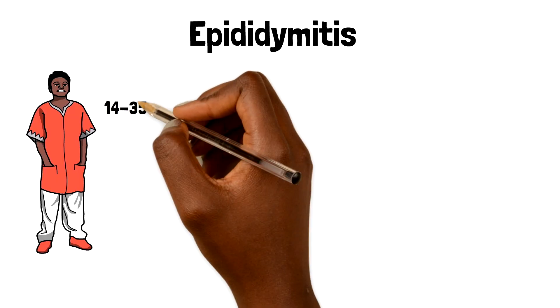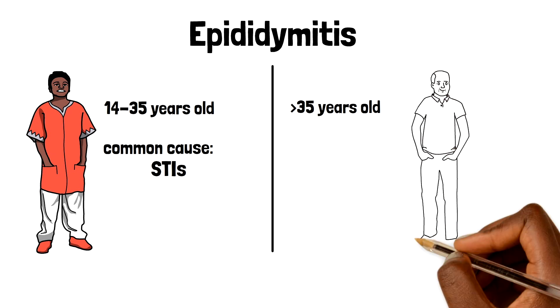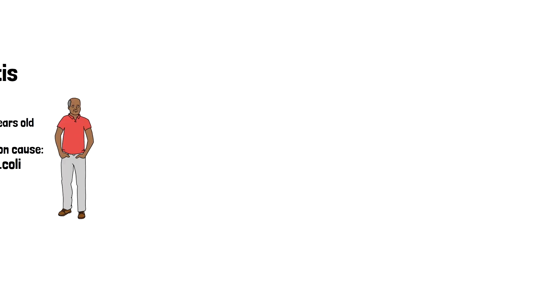Between the ages of 14 and 35, the most common cause of epididymitis is STIs. Over the age of 35, or in those with a low risk of STIs, the most common cause includes E. coli, which is spread from the bladder. If you assess the patient and feel that the epididymitis is less likely to be due to an STI, current guidance suggests sending off a urine for an MSU and then treating them empirically with either ofloxacin or levofloxacin. These are both quinolone antibiotics, so it's important that each patient is counselled about potential side effects, particularly to the muscles, joints, and also the central nervous system.